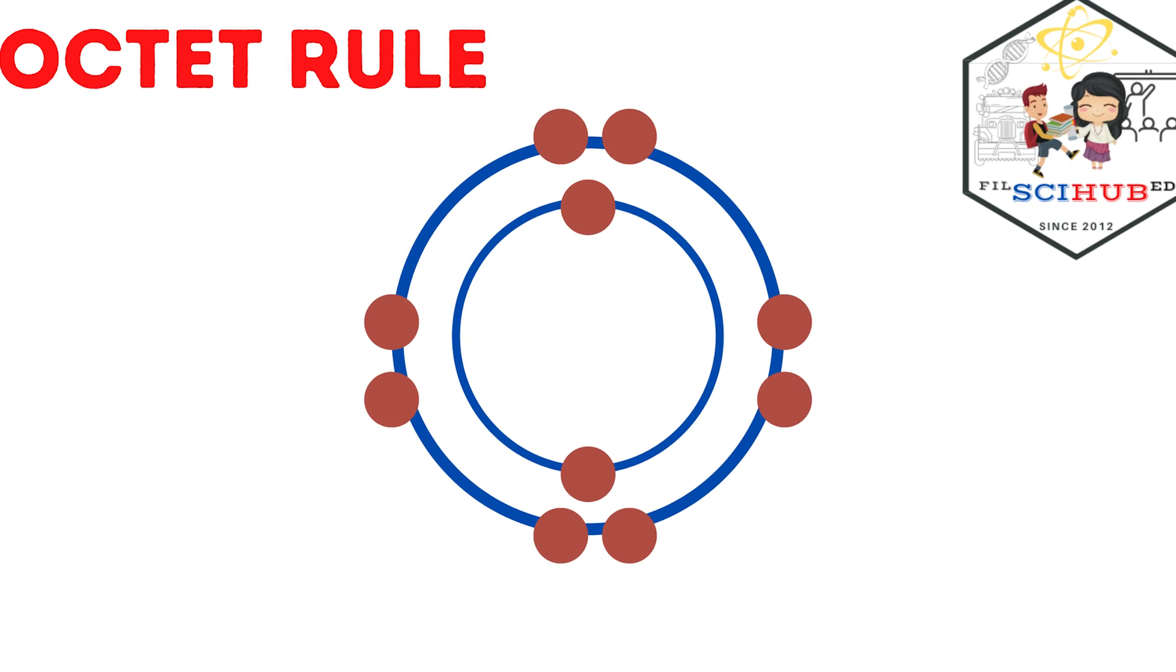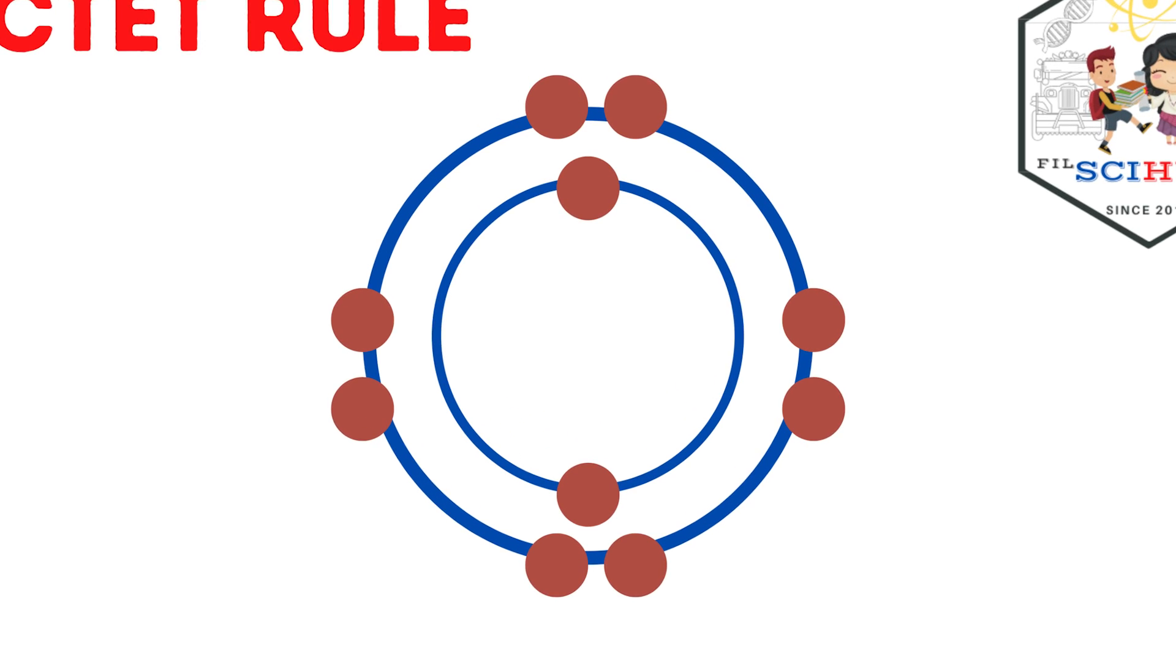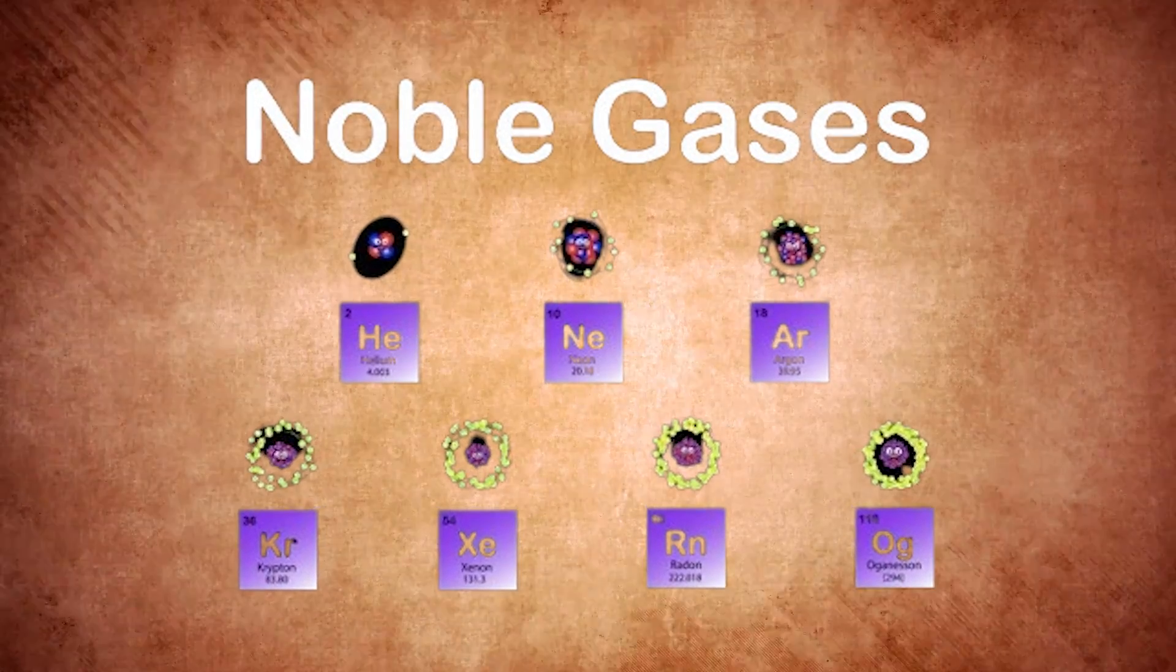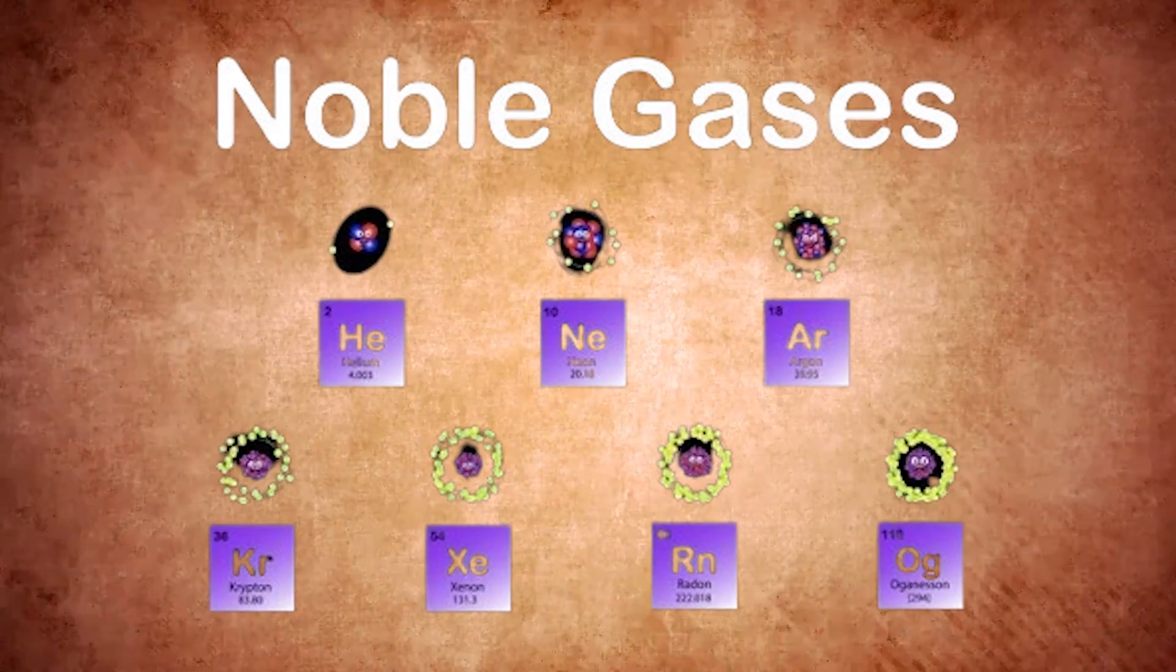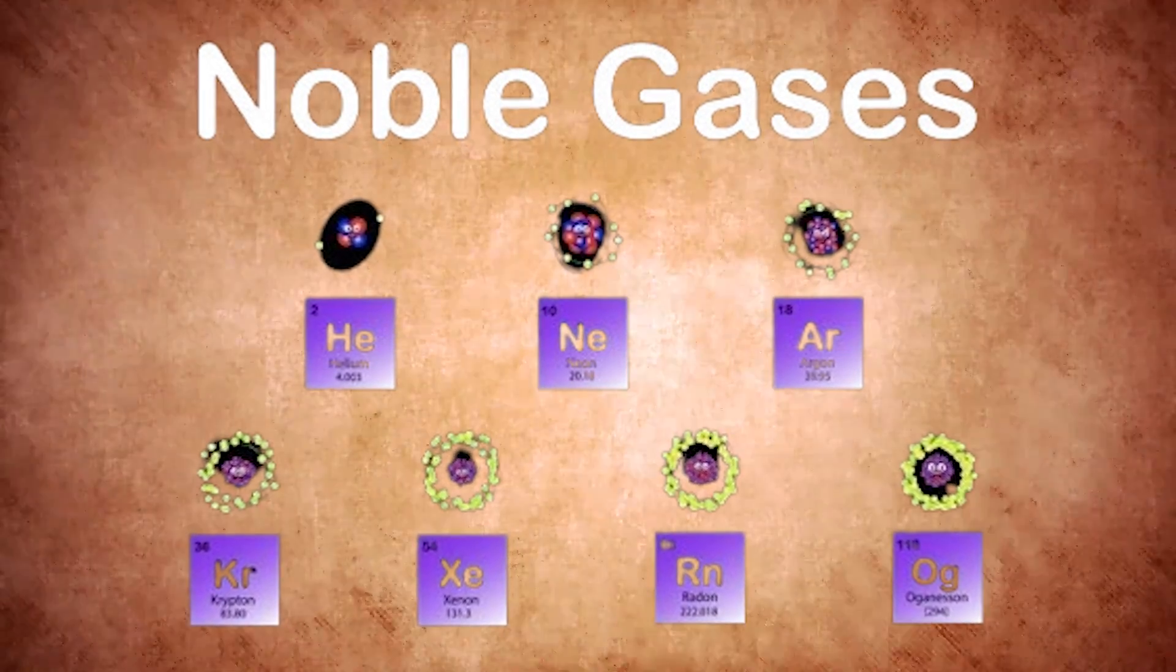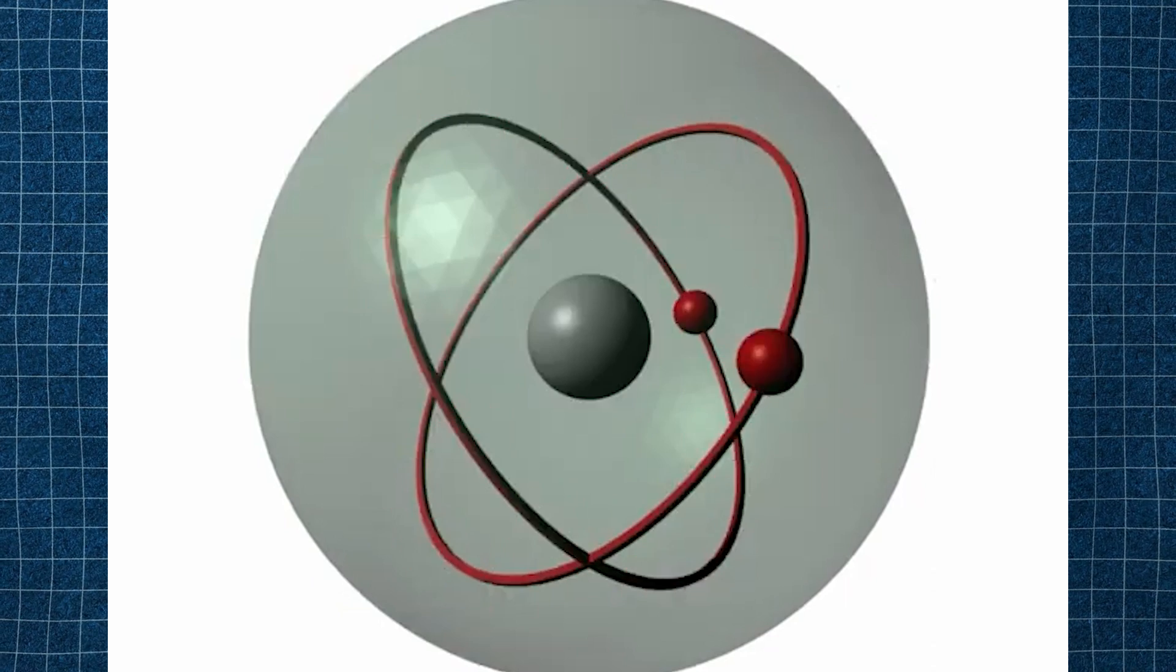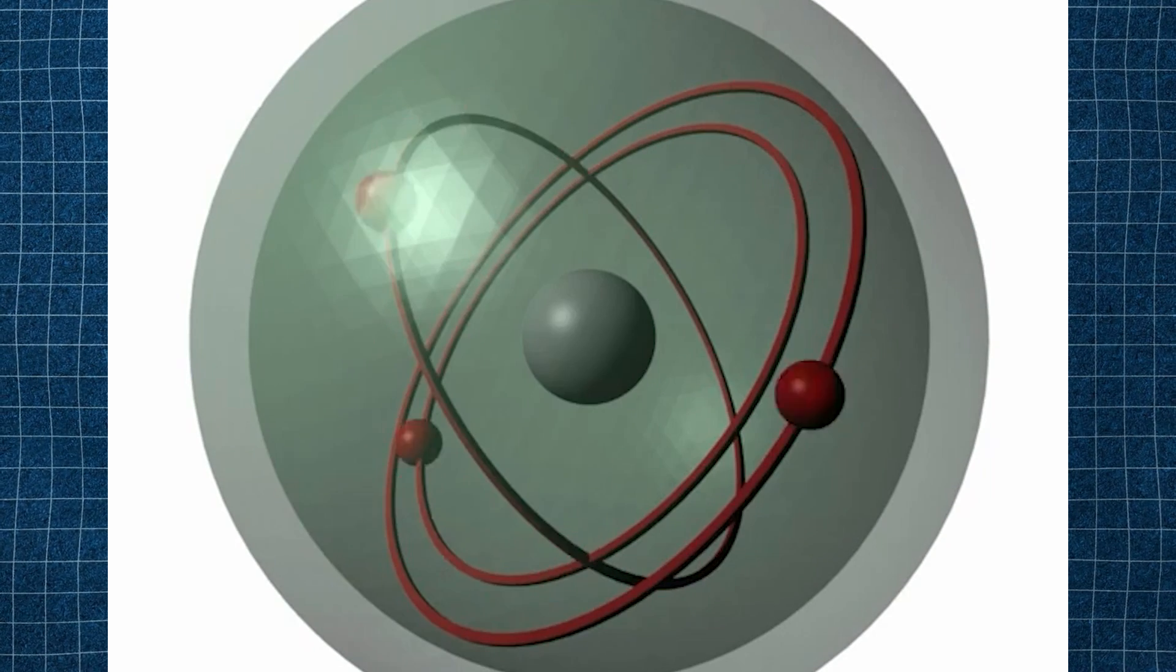You might recall the octet rule from chemistry. An electron shell with eight electrons is stable. This stability is why noble gases don't interact with other elements, as their electron shells are already full. A similar concept applies to nuclear stability, where certain magic numbers complete nuclear shells.